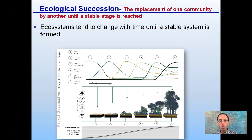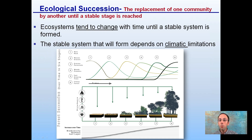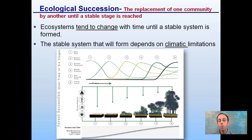The definition of ecological succession is a replacement of one community by another until a stable stage is reached. Ecosystems tend to change with time until a stable system is formed. This may occur in a short period of time or an extremely long period of time — the key part is over time. We're transitioning until a stable system is formed, and that stable system will form depending on climatic limitations. Not all ecosystems will reach the same stable form; the stable form is determined by the climate and geographic location.